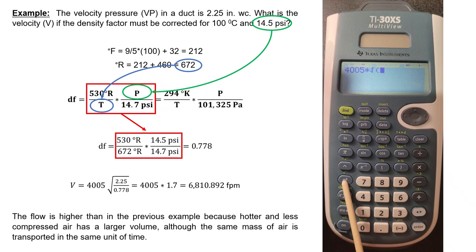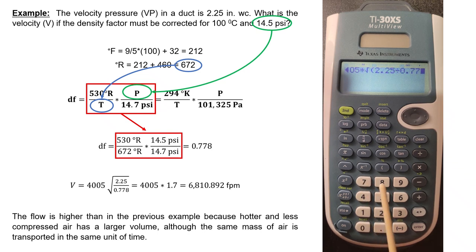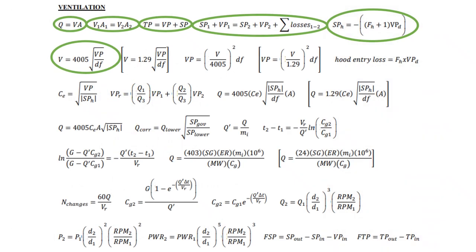The flow is higher than in the previous example because hotter and less compressed air has a larger volume, although the same mass of air is transported in the same unit of time. Now let's talk about the 7th equation, which is the metric version of the 6th equation. All equations shown in red brackets are the metric version of the equation in front of them.